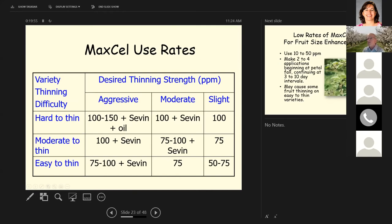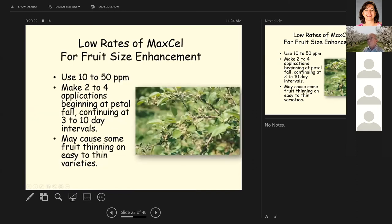These are some Maxell use rates. You can see the variety thinning difficulty over here, hard to thin, moderate to thin, or easy to thin. And then whether you want an aggressive, moderate, or slight thinning program. So you can see 100 to 150 parts per million plus oil if you're trying to be aggressive, whereas you're only going to use 100 parts per million of Maxell if you want a slight thinning effect. So there's a chart you can use.